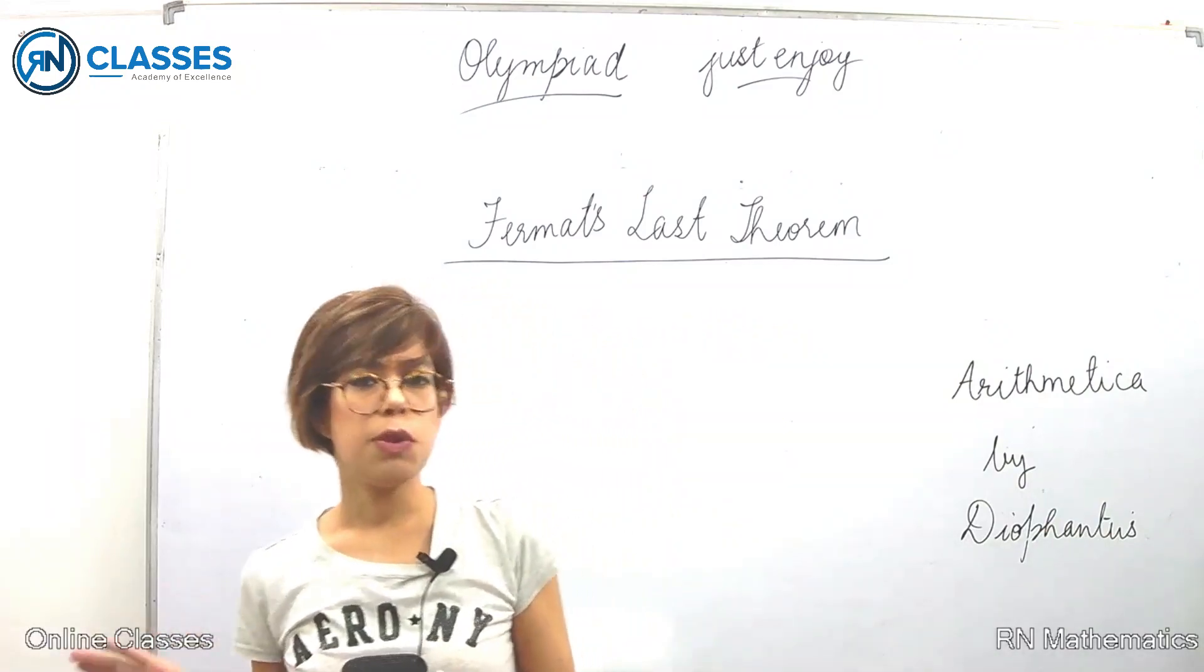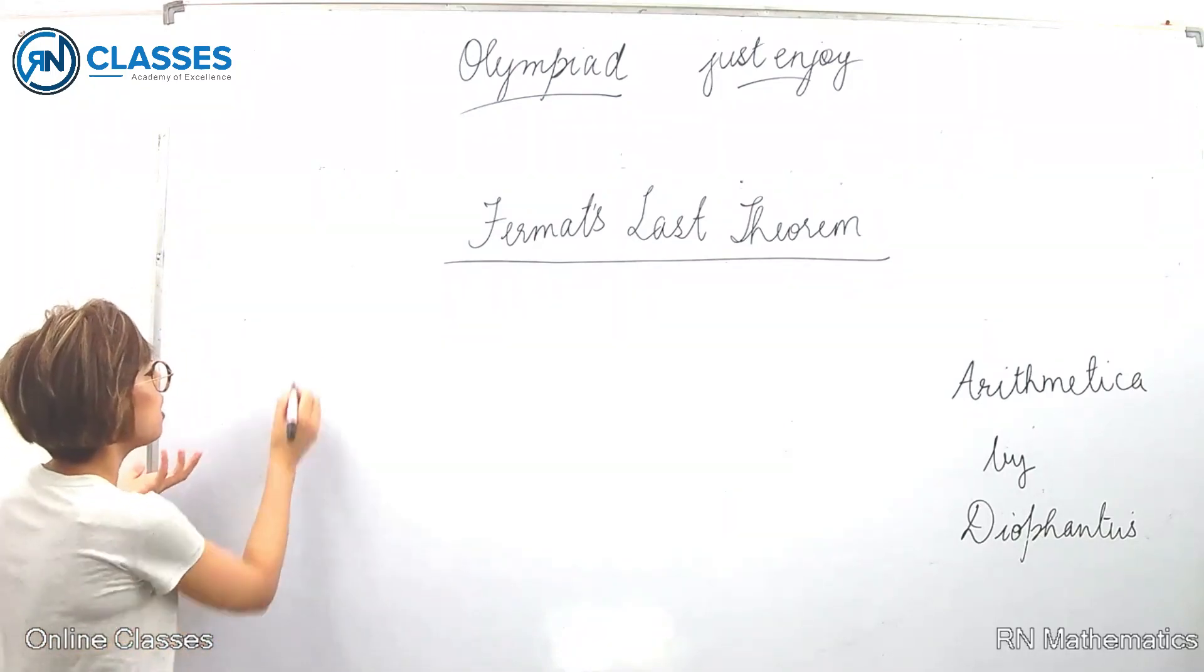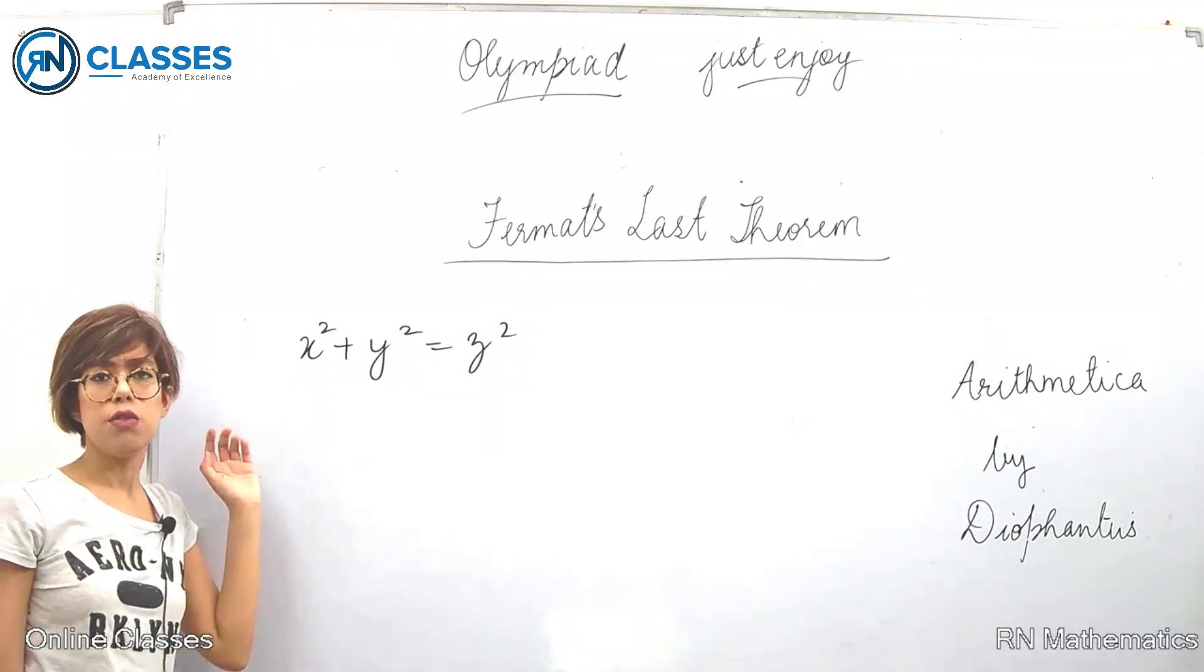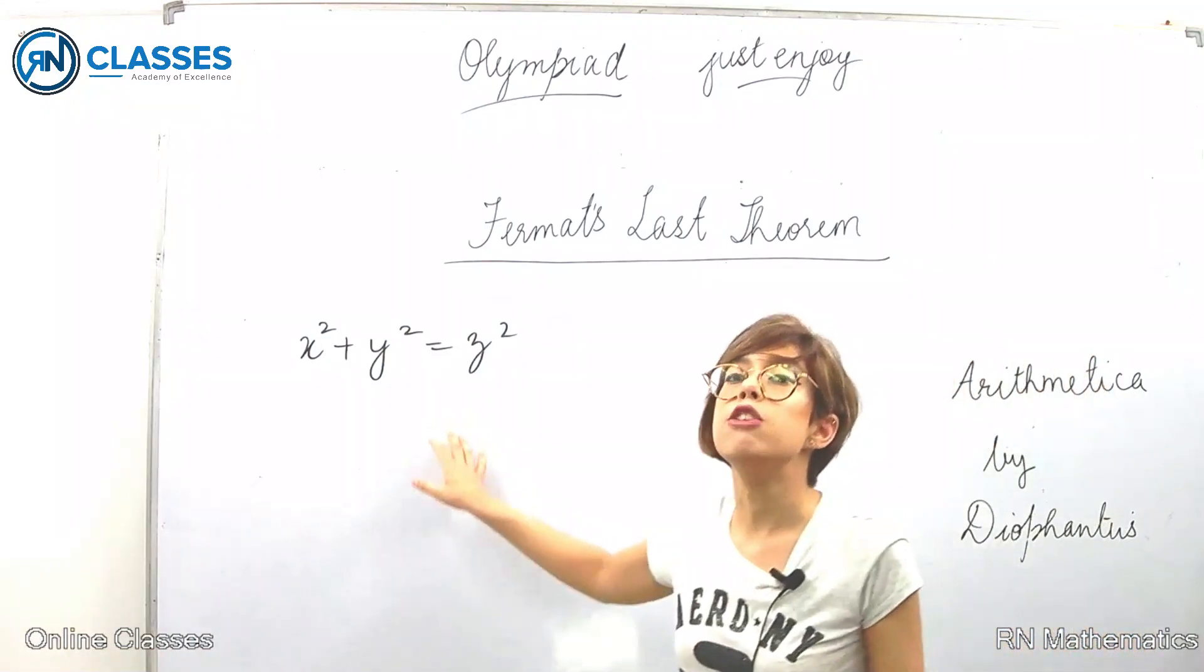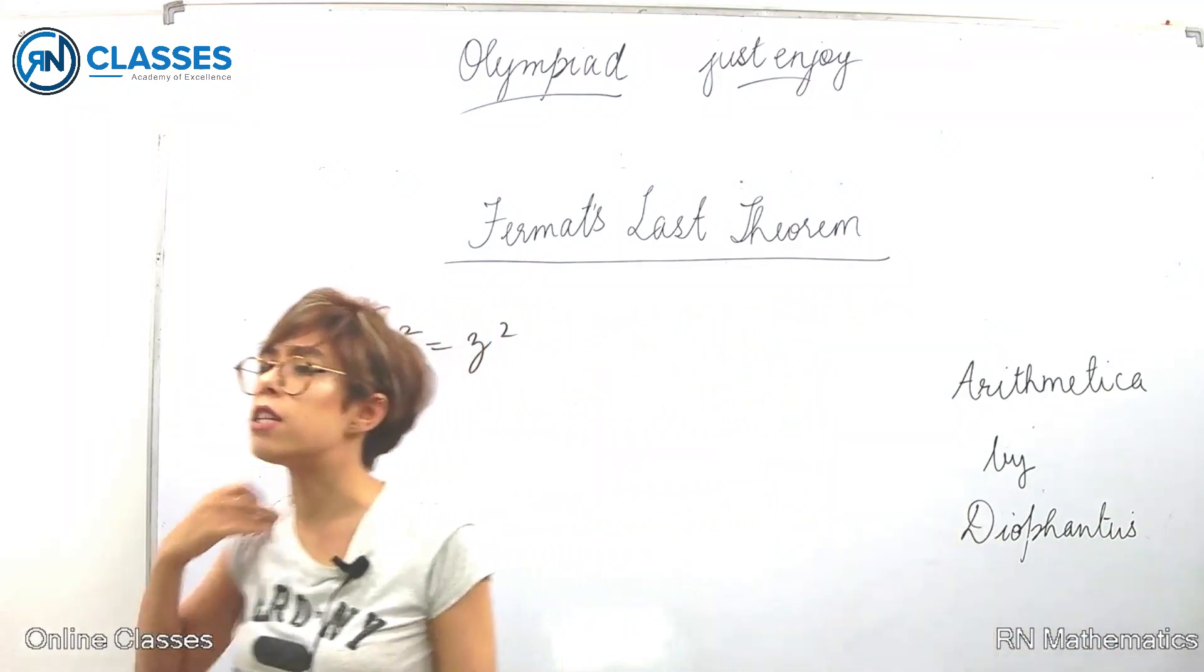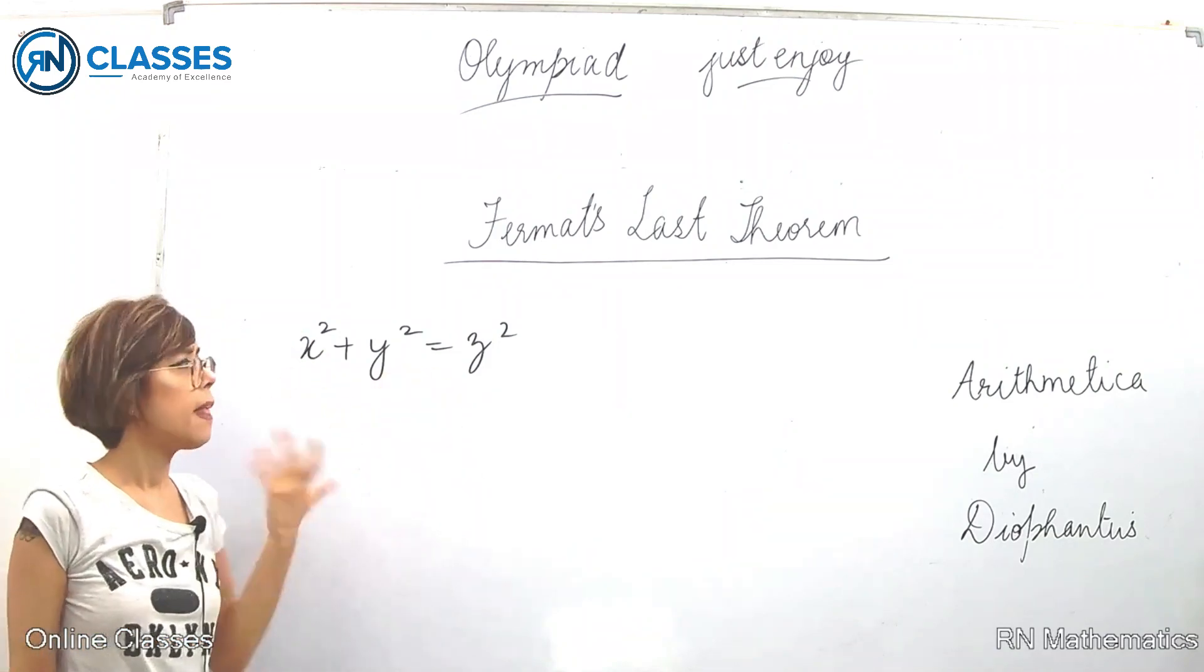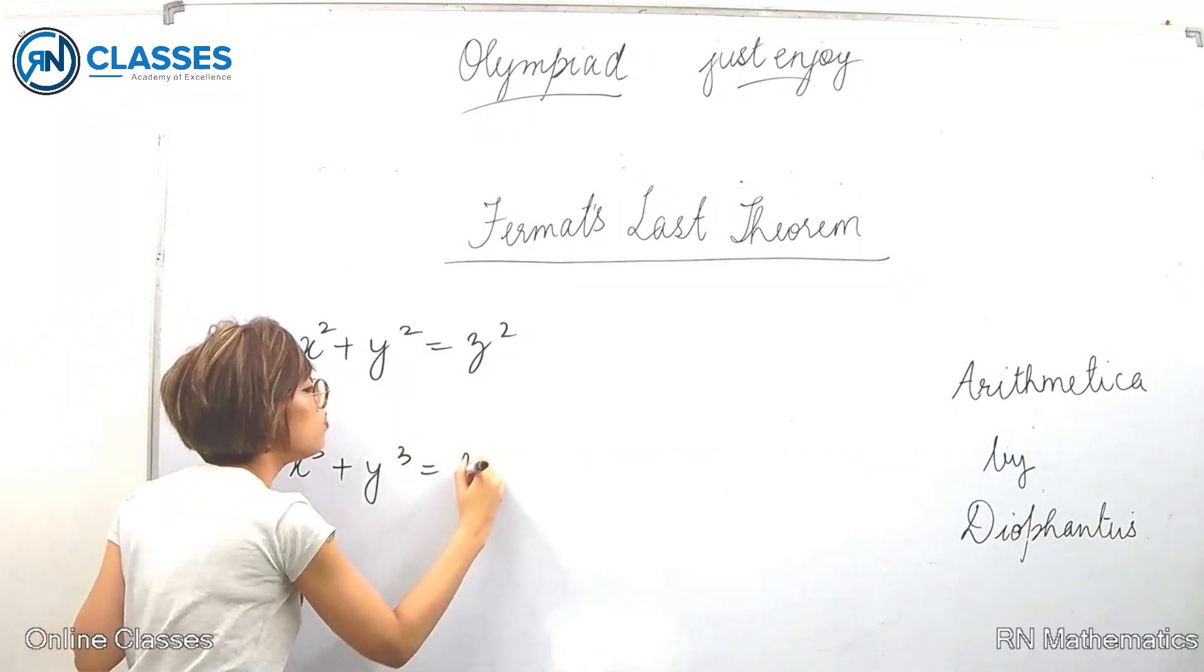He was a French mathematician. When he got free from work in the evening, he used to read about mathematics. One day he came home and was reading this book Arithmetica by Diophantus. In this book, he encountered the Pythagoras theorem, which we're all acquainted with.